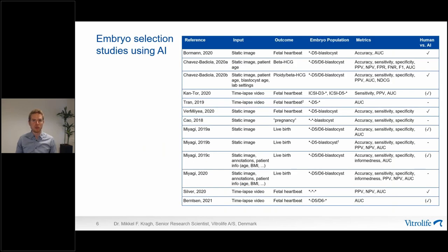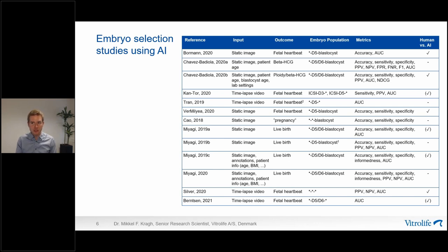In our paper, we reviewed 13 studies that all used pregnancy-related outcomes to train and evaluate AI models using image data, with the shared goal of choosing the embryo most likely to result in a pregnancy or live birth. However, as the table shows, they were remarkably different in terms of data inputs, pregnancy outcomes, embryo populations, and reported performance metrics. For this reason, we cannot compare them directly. I'll go through each column of this table and discuss its relevance for model development, evaluation, and clinical practice.